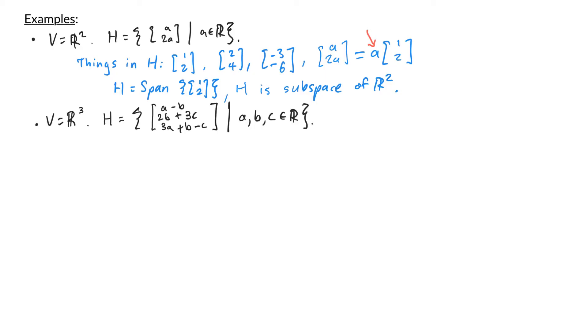In our next example here we are working in r3 and h is the set of vectors of the form a minus b, 2b plus 3c, and 3a plus b minus c where a, b, and c can be any real numbers. An arbitrary element in h is of the form a minus b, 2b plus 3c, and 3a plus b minus c. Now we can break this apart just like when we write vectors in parametric vector form. Here the parameters are a, b, and c.